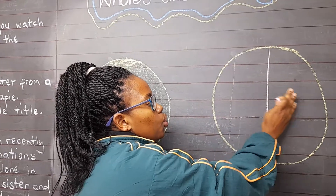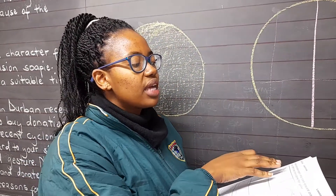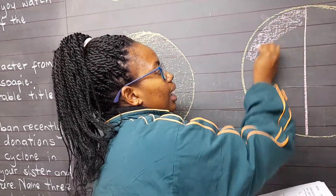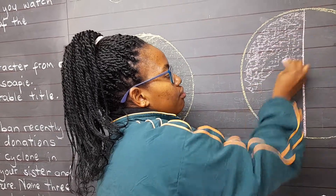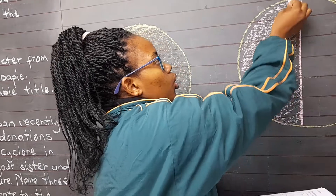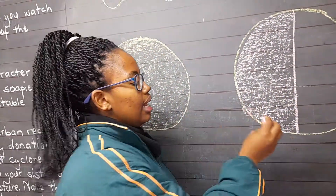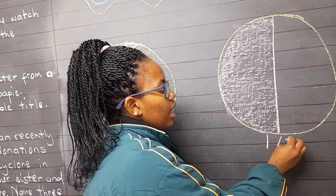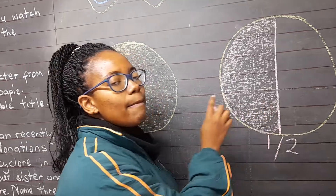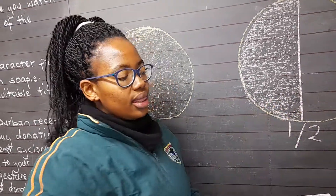Now these are two equal parts. For us to have the half shaded part, we need to colour one half. Make sure your colouring completes the whole half so that it looks like this. Now it makes it one over two — the two means it's two equal parts, but we coloured one part of the two.